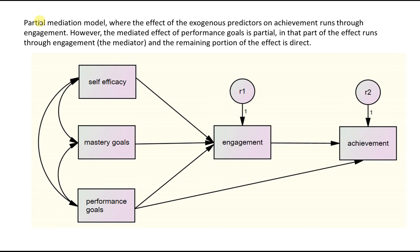Here's an example of a partial mediation model where the effect of the exogenous predictors on achievement runs through engagement — self-efficacy, mastery goals, and performance goals run through engagement to achievement. But there is also a direct effect of performance goals on achievement. So the effects of performance goals on achievement are proposed to be both direct and indirect through the engagement pathway.